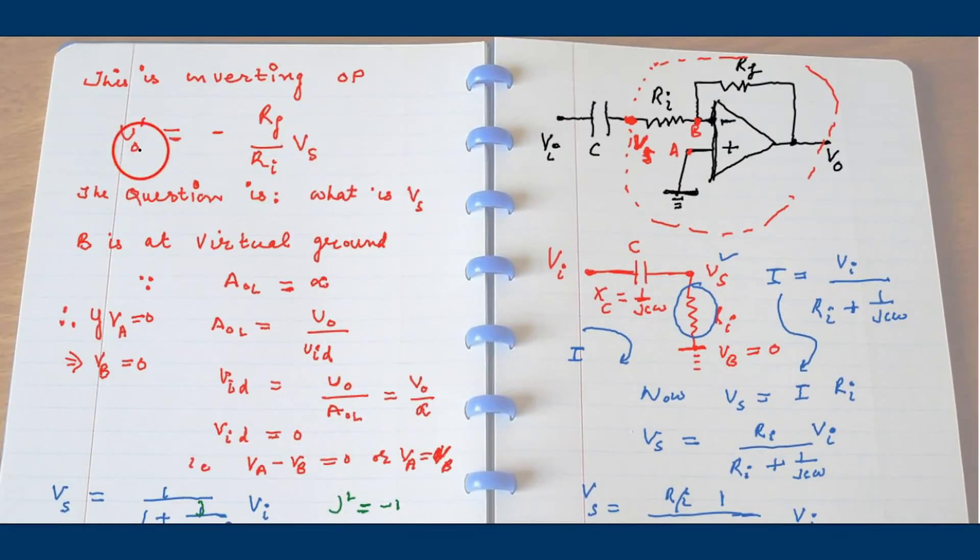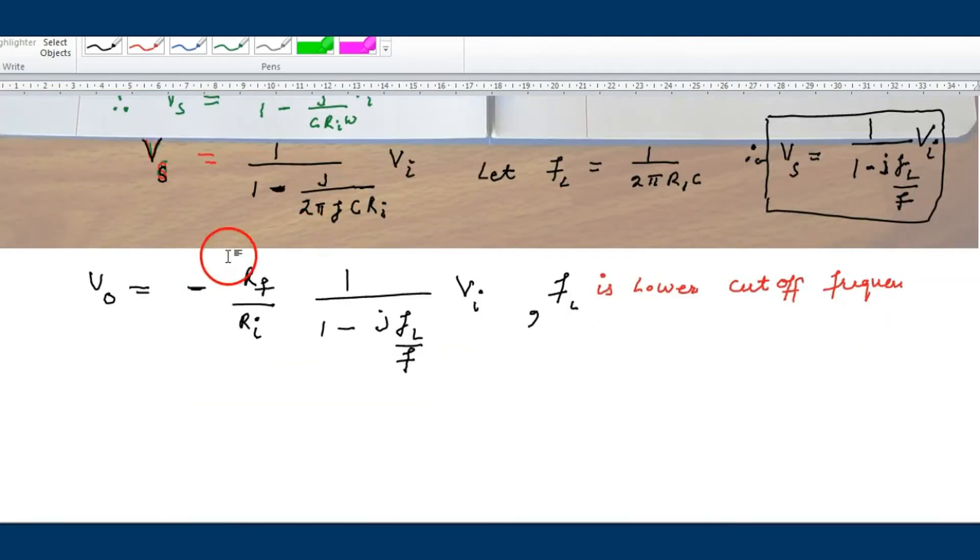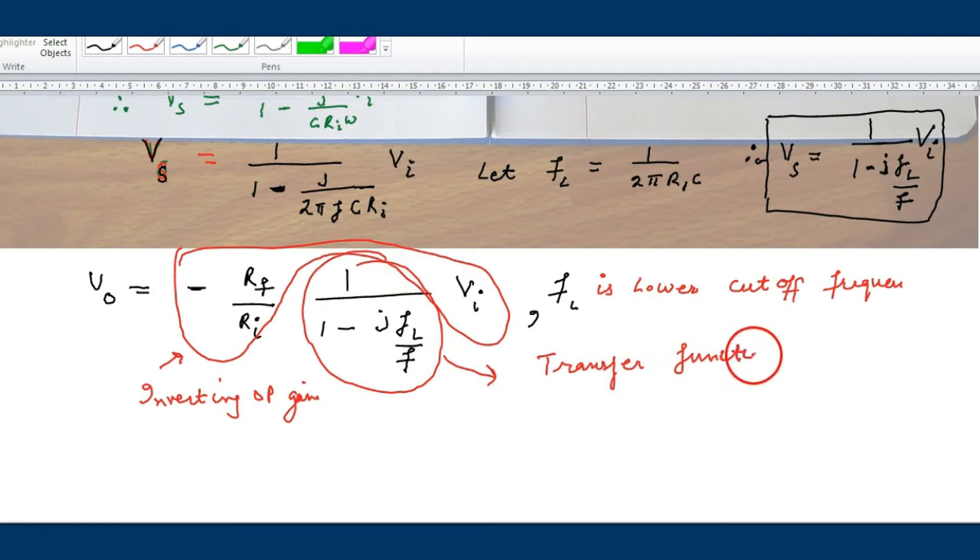Now because output signal is V0 equals minus RF upon RI into Vs. Substituting Vs here, where Vs is 1 over 1 minus j fl upon f into VI. So this is the expression for the output voltage of inverting op-amp with capacitor, high pass capacitor filter. This much is the gain or transfer function. This is additional, the inverting op-amp gain because of the high pass filter, because the capacitor is attached. So this expression is coming because of the presence of this capacitor.